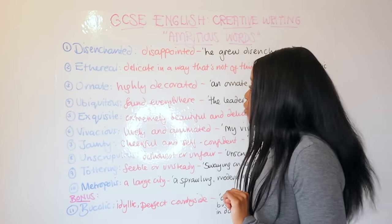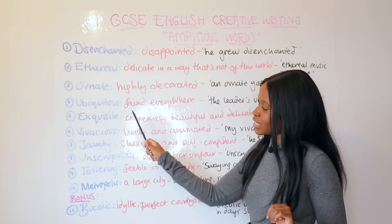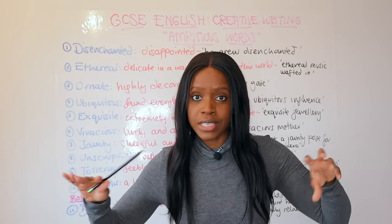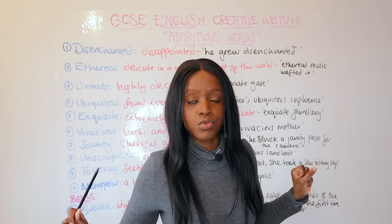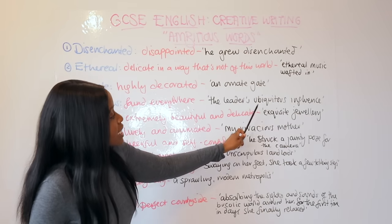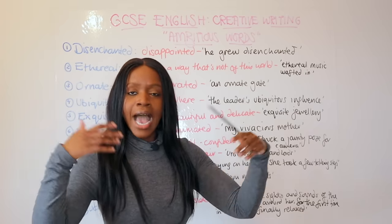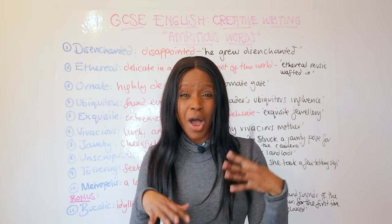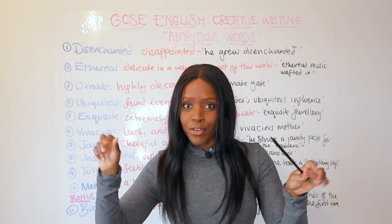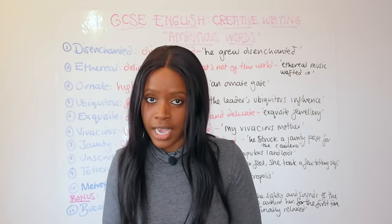The fourth ambitious word is 'ubiquitous,' which means something that is found everywhere — everywhere all at once. For example, you can talk about a leader's ubiquitous influence, or when thinking about company logos, smartphones, or social media, you can say that they are ubiquitous.